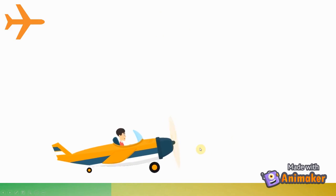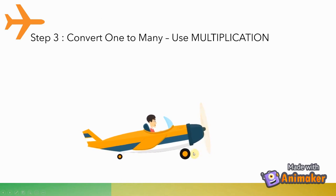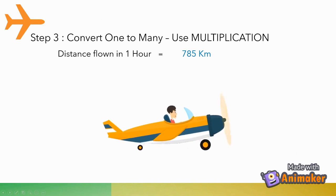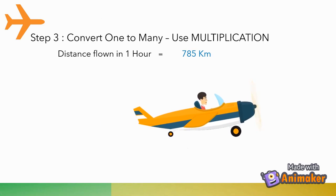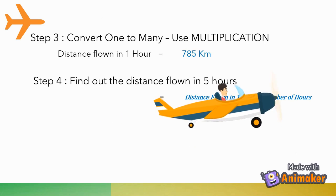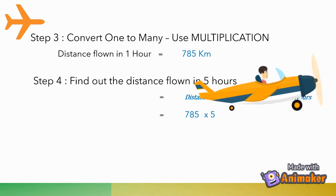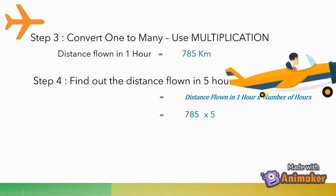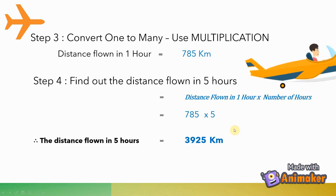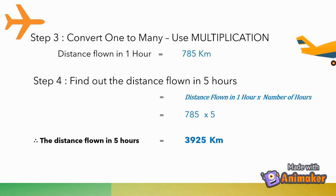Now, we have to find out how much distance the plane covers in 5 hours. We will convert 1 to many using multiplication. The distance flown in 5 hours is 785 multiplied by 5, which gives us 3925 kilometers. Good job!